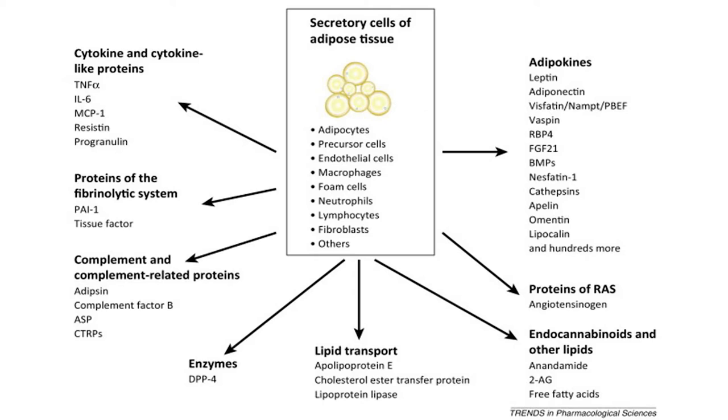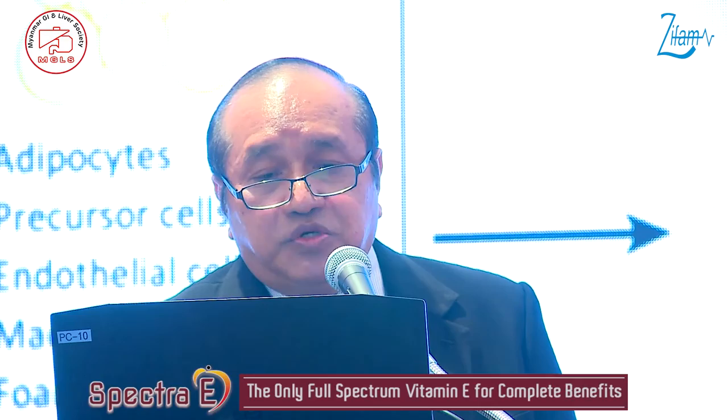This picture shows adipose tissue as an endocrine organ producing adipokines, RAS proteins like angiotensinogen, endocannabinoids, lipid transport proteins such as apolipoprotein E, control enzymes, immune function proteins, proteins of the fibrinolytic system, and both pro-inflammatory and anti-inflammatory cytokines.